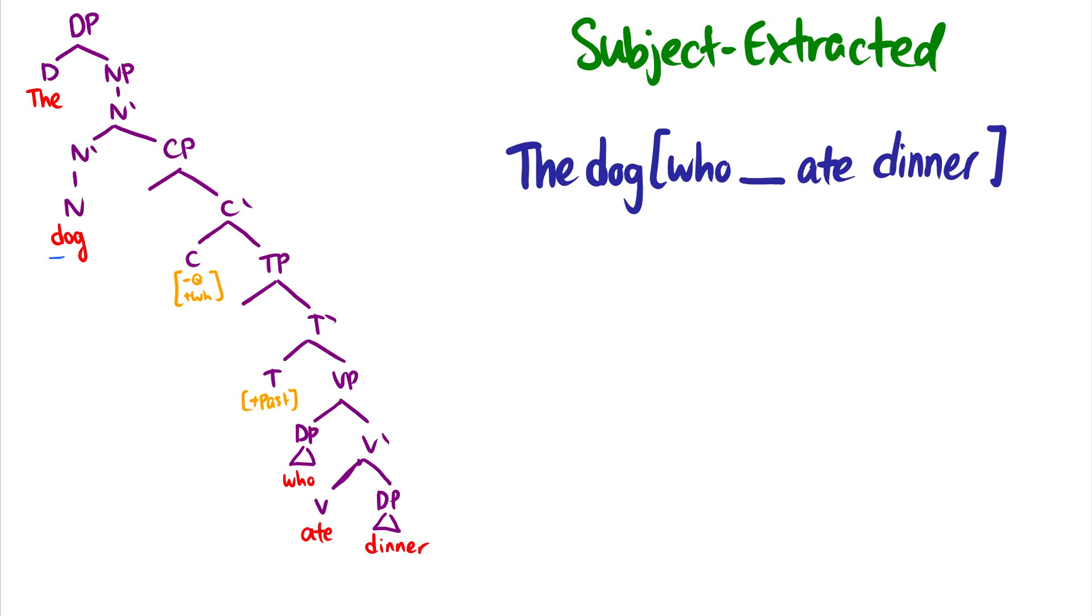Then this moves up to spec TP. So now we have the dog who ate dinner where this is the subject. But even though we're getting case here, nominative case, so we have case and a theta role, the C head for relative clauses isn't pulling for a question but it is pulling for a WH word. It wants that WH word to fill in the specifier of CP. So this is a plus WH minus Q.